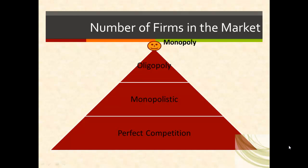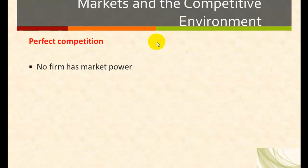At the bottom of the pyramid we have a perfectly competitive industry, which consists of a large number of firms. Above that is the monopolistically competitive industry, which consists of fewer firms. After this we have the oligopolistic structure, and then at the top of the pyramid we have an industry which only consists of one firm — the monopolist.